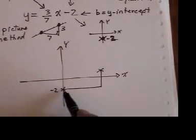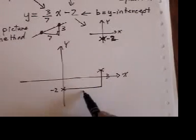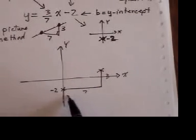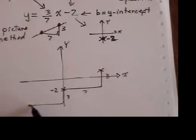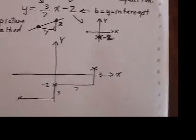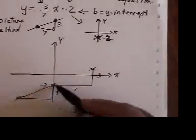Or I could go down 3 and over 7 to the left. Here is my final line.